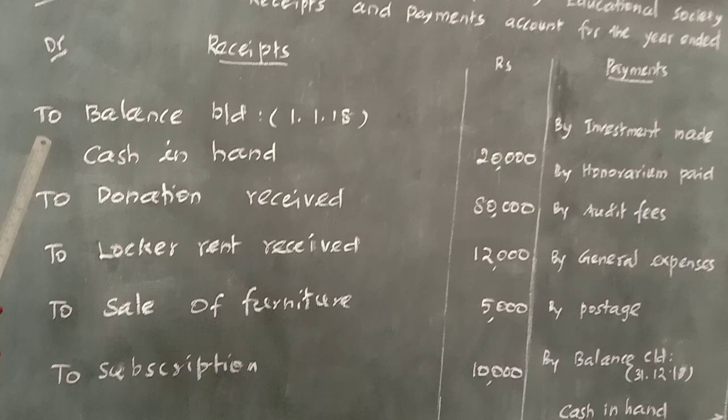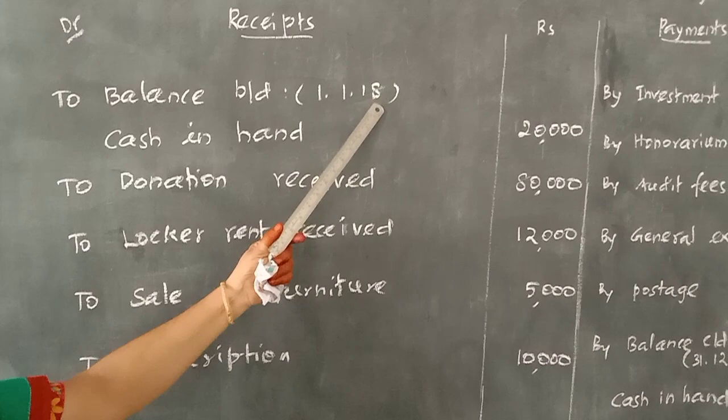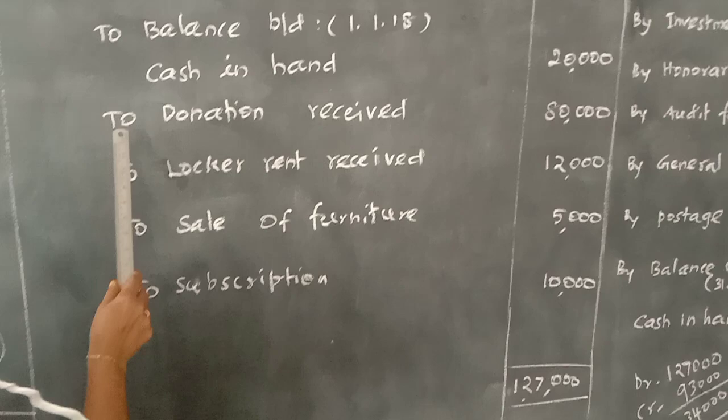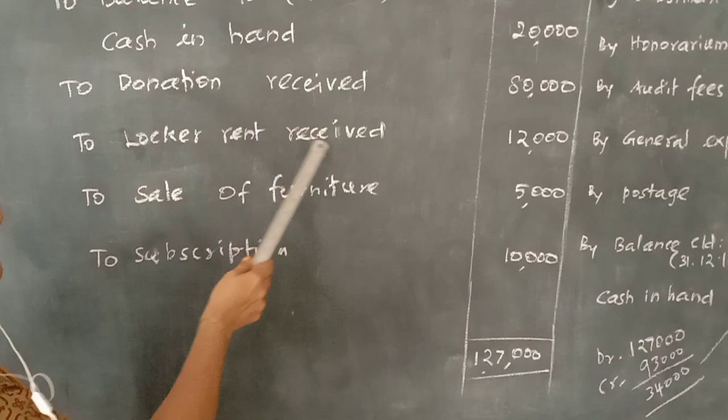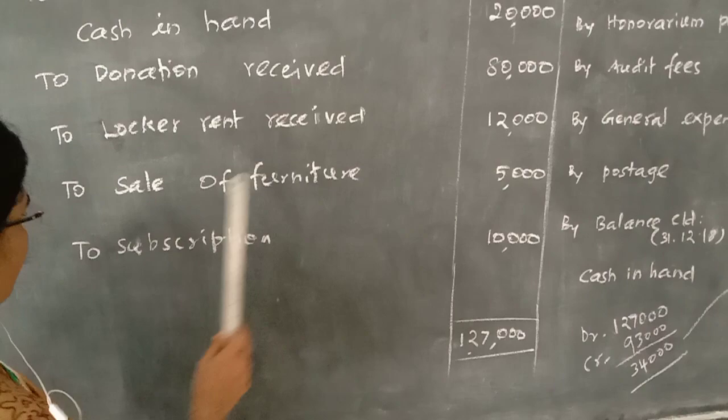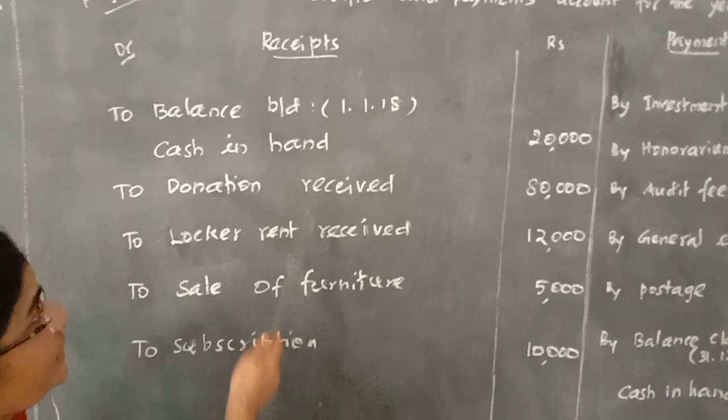First you have to fill the receipt side. First, write the balance: To balance brought down 1-1-2018, that is cash in hand 20,000. Next, received: To donation received 80,000. To locker rent received 12,000. To sale of furniture 5,000. By subscription received 10,000. So these items are receipts, and you have to enter them on the debit side of the notebook.